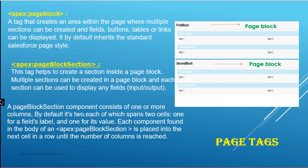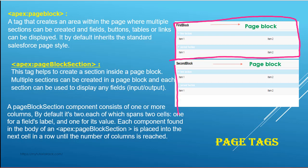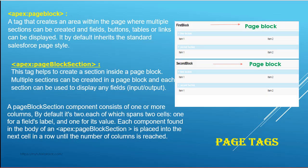As you can see in this picture, the pageBlock tag creates an area inside of a page where multiple sections can be created, and you can add multiple fields, buttons, etc. In this figure I have created two page blocks — the first block and the second block. Inside of the first page block I have created two sections: a first section and a second section.